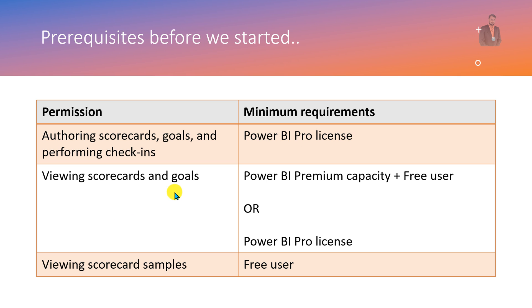For viewing scorecard and goals, there are two types of mechanisms available: either you should have a combination of Power BI Premium capacity and free users, or you should have a minimum Power BI Pro license. Microsoft also launched a couple of scorecard samples - if you wanted to have that, you can go with the free licensing as well. In short, the summary is that minimum Pro license is required in order to start with Power BI Goals.